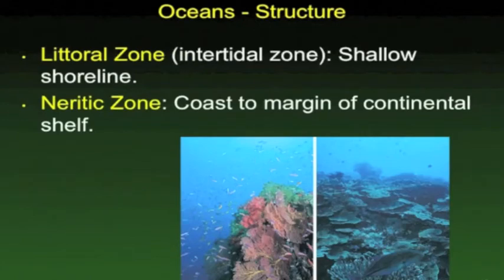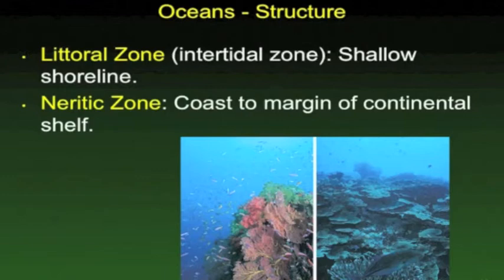When we consider the structure of oceans, we look at different zones. Starting near the shore, we have the littoral zone — that very shallow section of the shoreline. Moving further out to the edge of the continental shelf, where the bottom drops down dramatically, that's the neuritic zone. The combination of littoral and neuritic zones is where most ocean organisms are located. Beyond that is the oceanic zone.